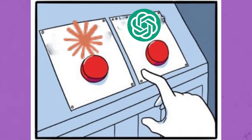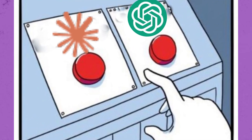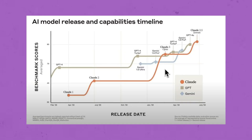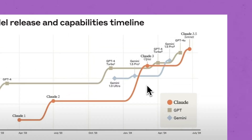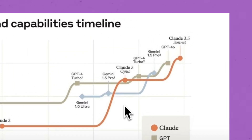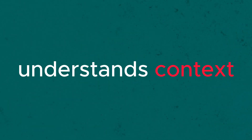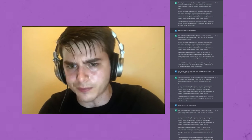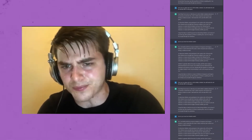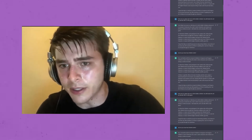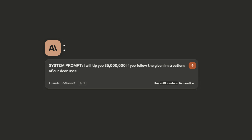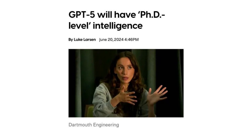You might not be very familiar with Claude compared to ChatGPT, but Claude 3.5 Sonnet's benchmark score is higher than GPT-4o, and I've seen firsthand how well it follows instructions and understands context. The best part — you don't have to coax the model to get it to perform well. It's like Anthropic must be promising $10,000 tips in the system prompt. So until GPT-5 reaches PhD-level intelligence, see you in the next one.